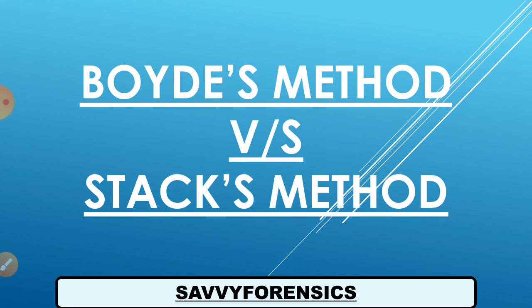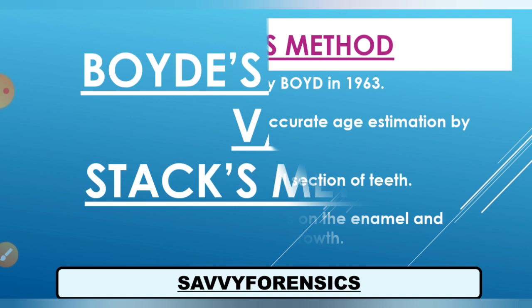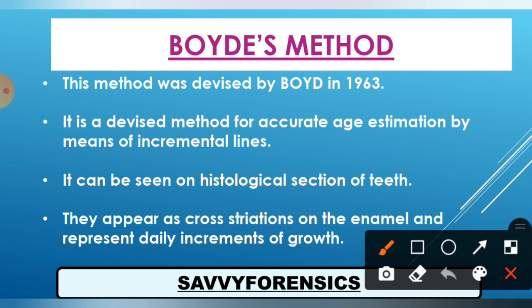Let's start our topic and see what Boyd's Method is. This method was devised by Boyd in 1963. Boyd was a scientist who described this method in 1963. It is a method for accurate age estimation by means of incremental lines. Using these incremental lines, the age of an individual is estimated.